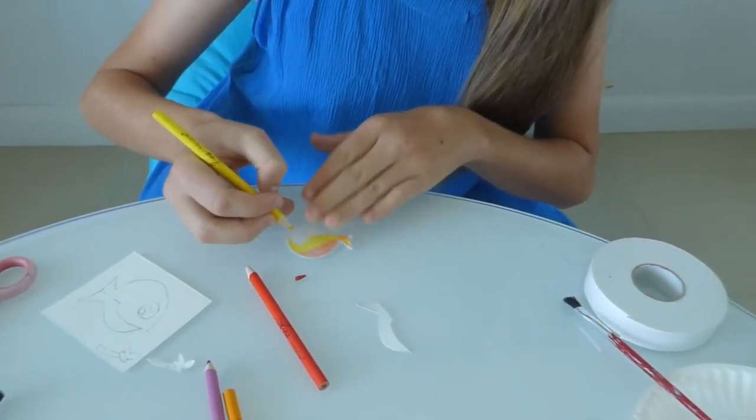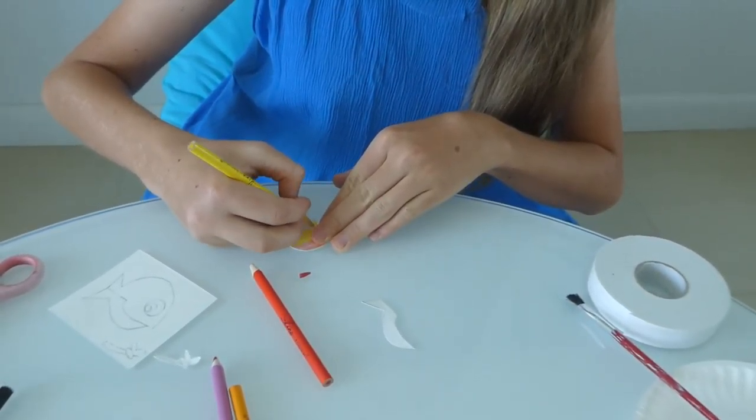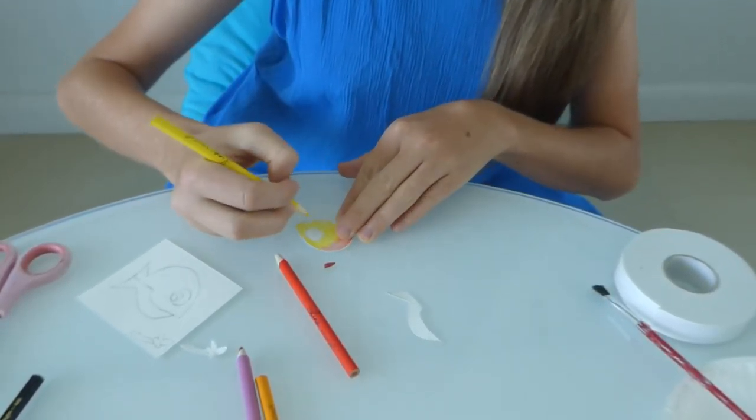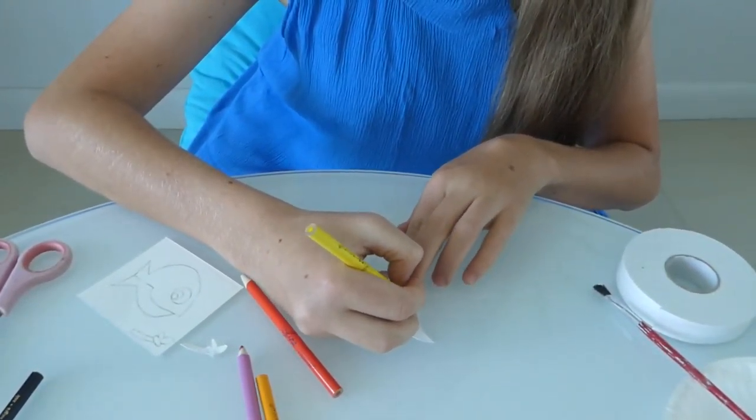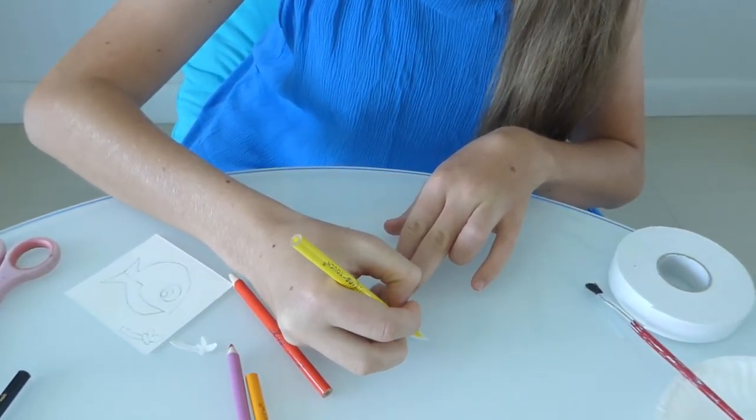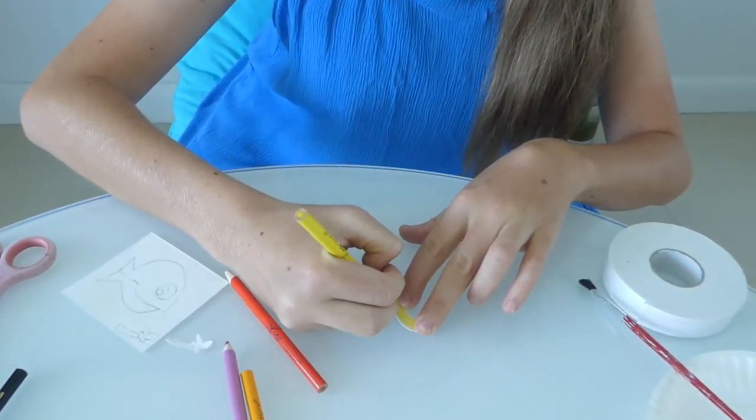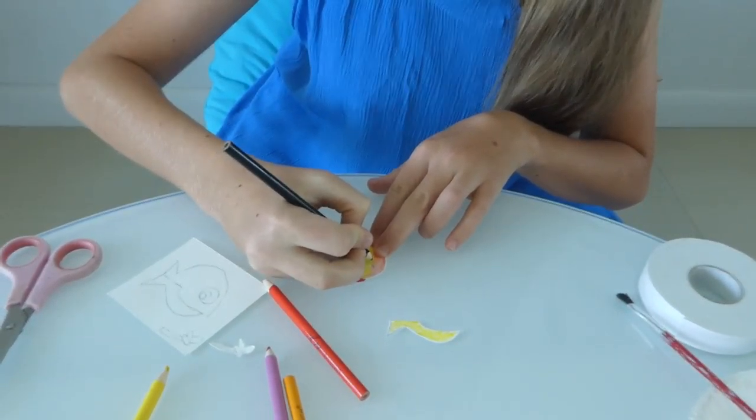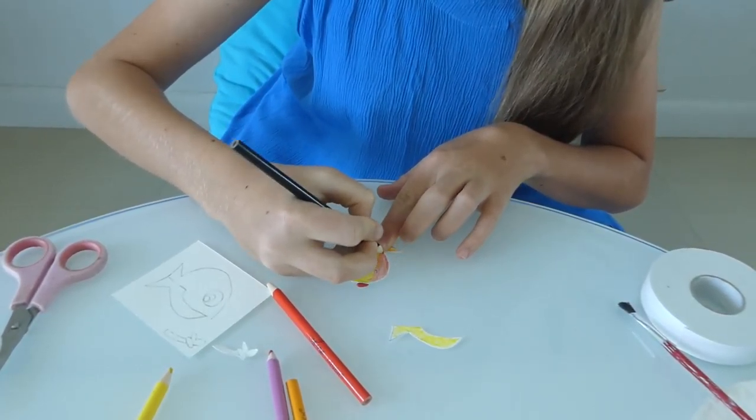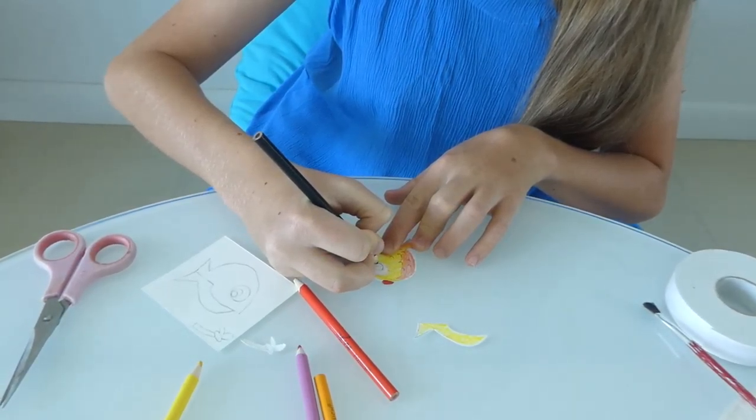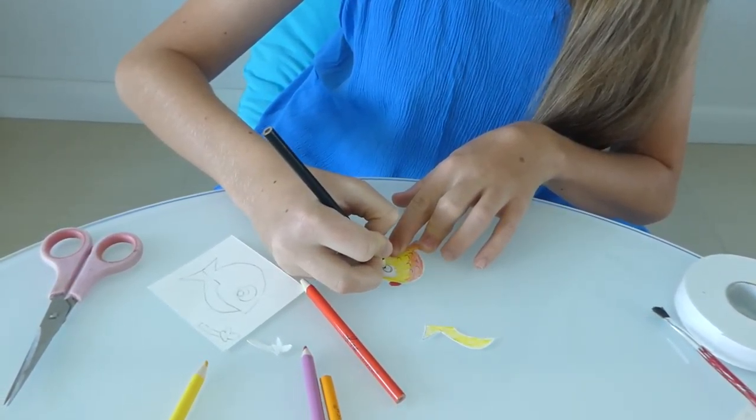Fish. And the eye will be black. Here. And then the bottom. You also need to color the bottom. Okay. Now the fish has some black scales. Here. And the eye.